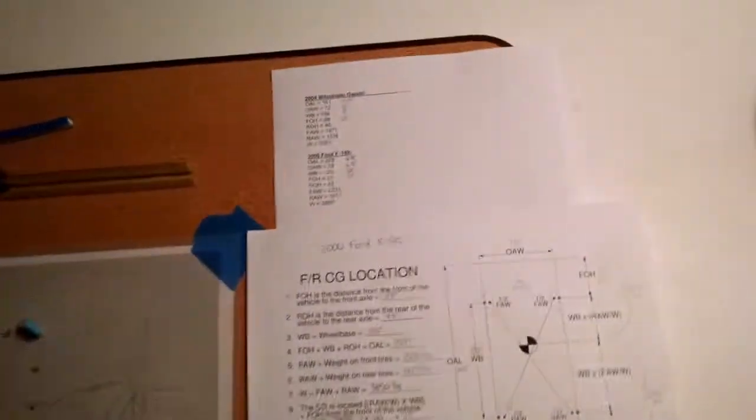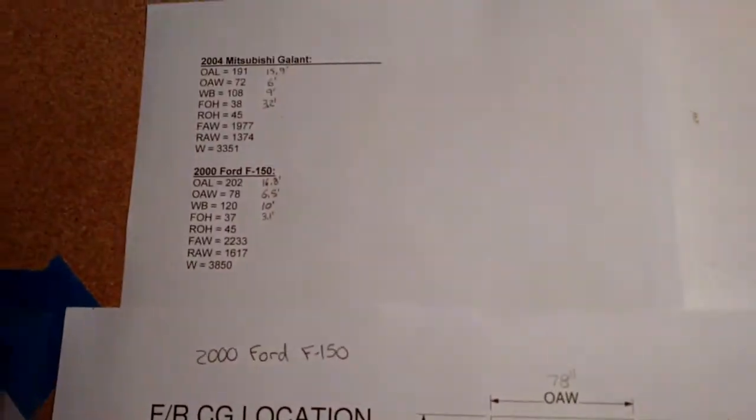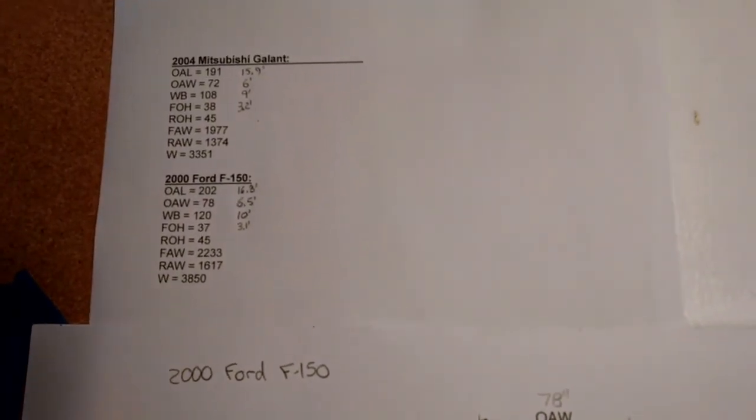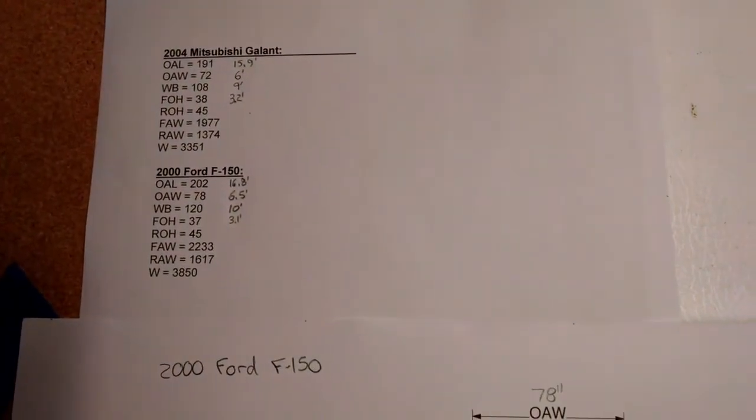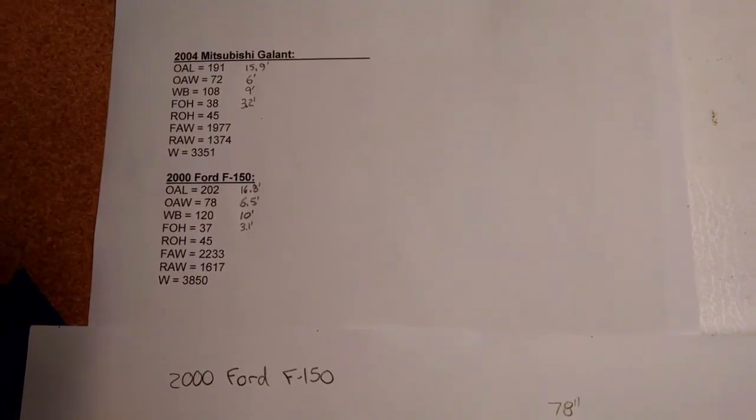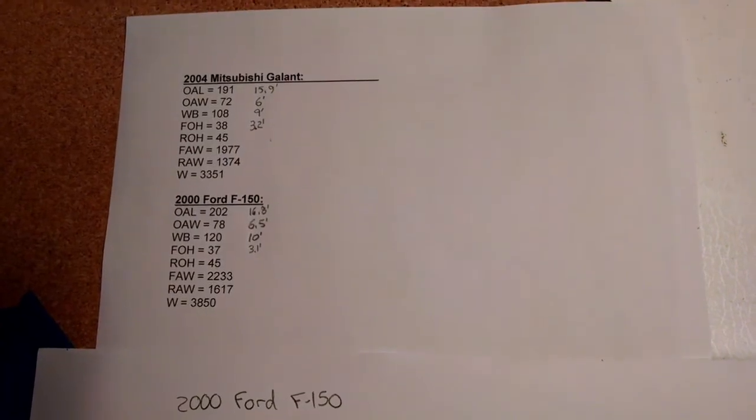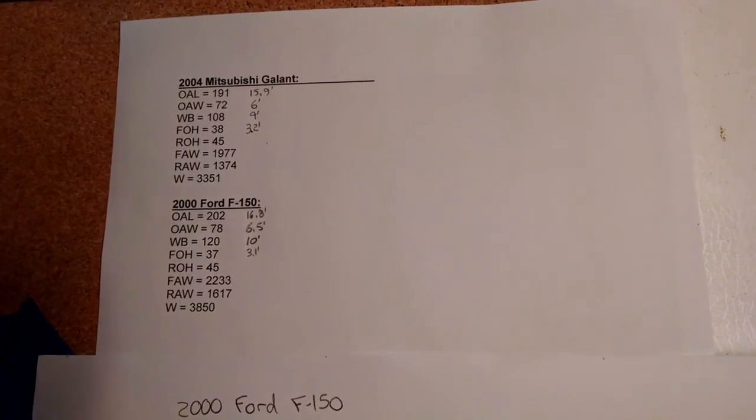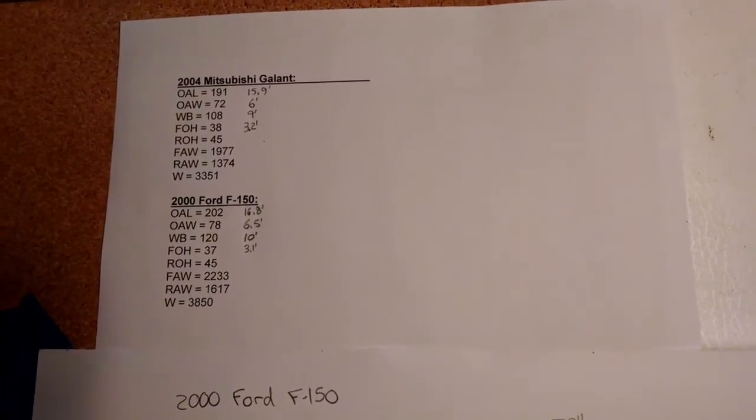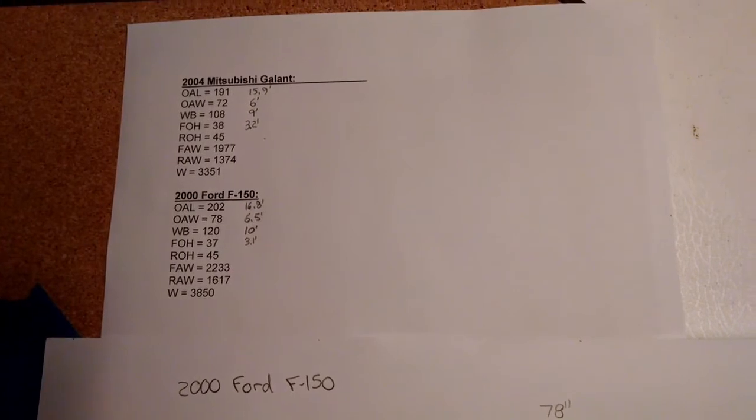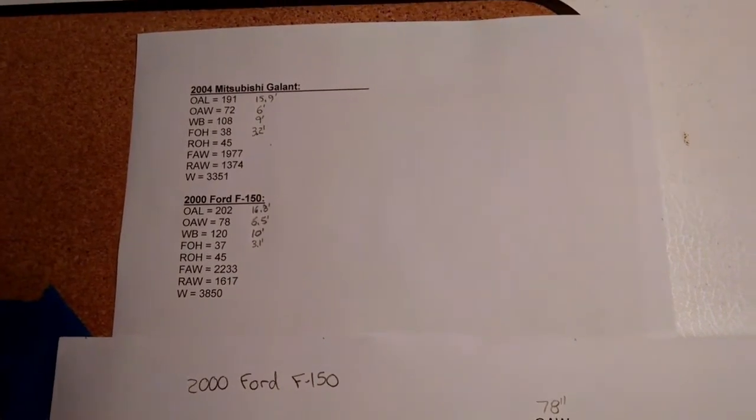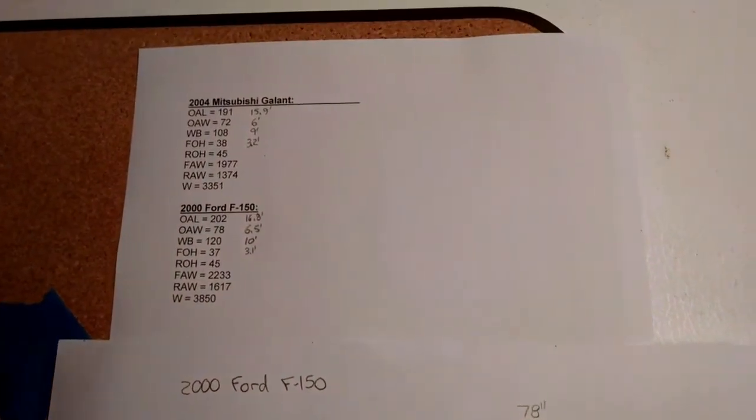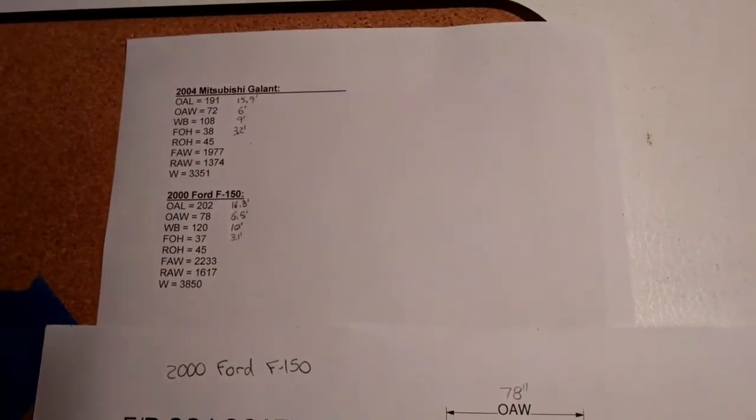So the first step was to get the pertinent information. It's either going to be supplied in the narrative in your test problem, or along with your test problem, you should be given overall dimensions of the vehicles, some combination of front axle weight, rear axle weight, total weight, or enough to figure out those three things, and a measure of front overhang, rear overhang, or maybe an expert auto stats printout or something along those lines, but enough to get that information all in one place.